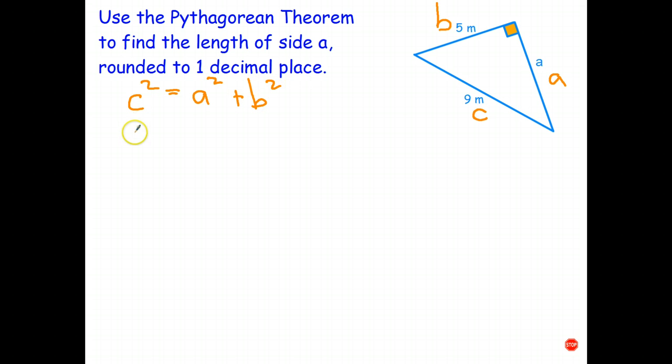In place of C, I put 9. In place of A, I just leave it as A. That's the unknown. And in place of B, I put 5. Okay, 9 squared is 81. 5 squared is 25.